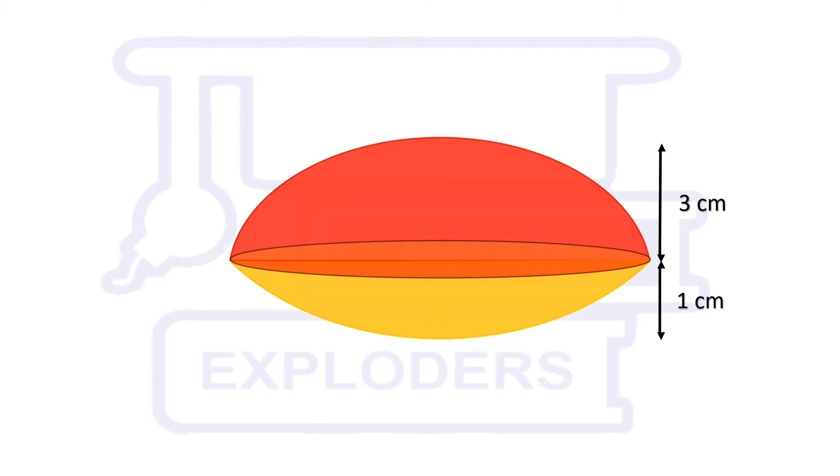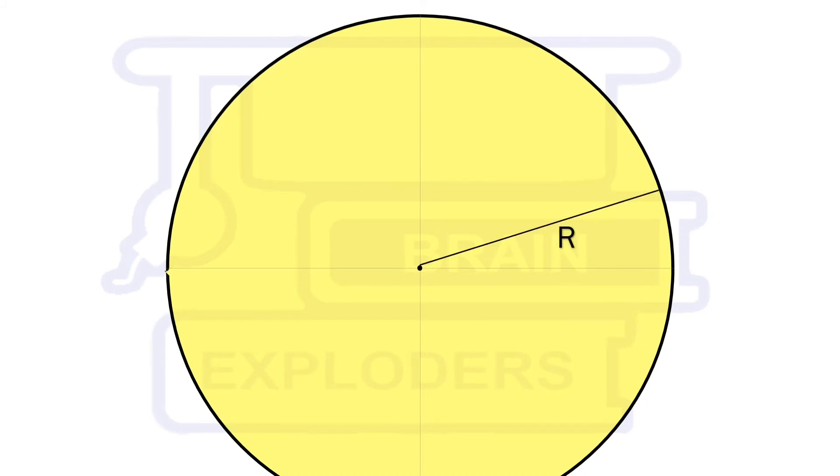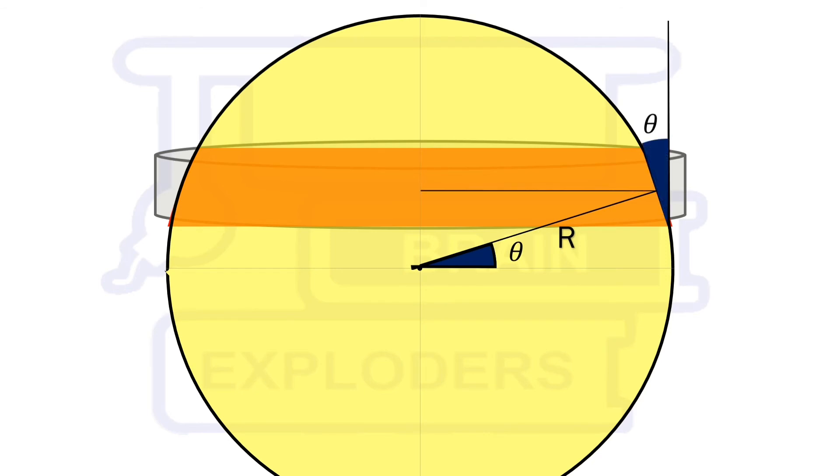Consider an infinitesimally small section of the sphere. Let the radius of the sphere be r. A cylinder of radius r and infinitesimally small height is surrounding that section of sphere.